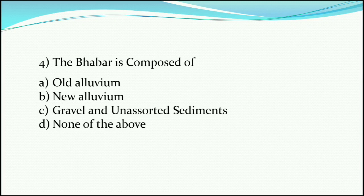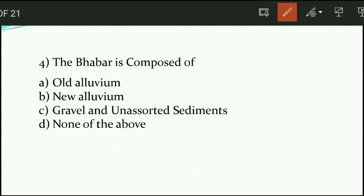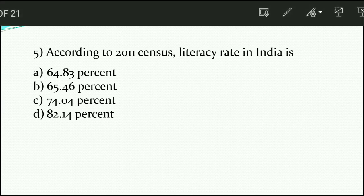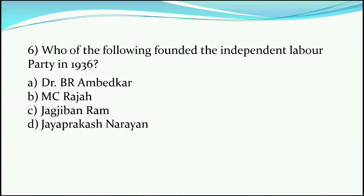Next: the Bhabhar is composed of option C — gravel and unsorted sediments. Question number five: according to the 2011 census, the literacy rate in India is option C, that is 74.04 percent.